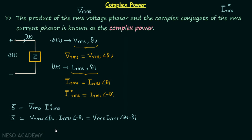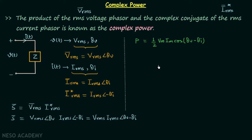Now I will explain the derivation of complex power using the formula of average power. We know average power P = ½ V_m I_m cos(θ_V − θ_I), and since cos(θ_V − θ_I) represents the real part of e^{j(θ_V − θ_I)}, we can write the average power as the real part of ½ V_m I_m e^{j(θ_V − θ_I)}. We then split the exponential: e^{jθ_V} × e^{−jθ_I}.